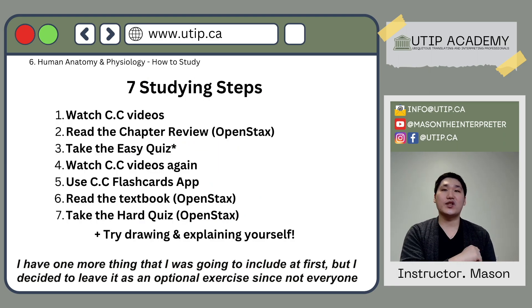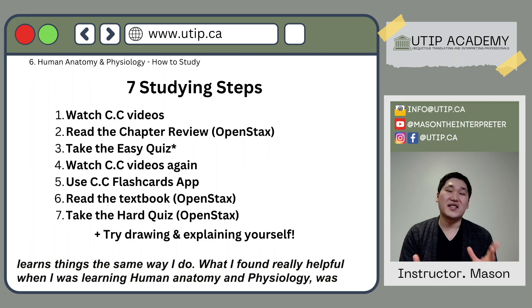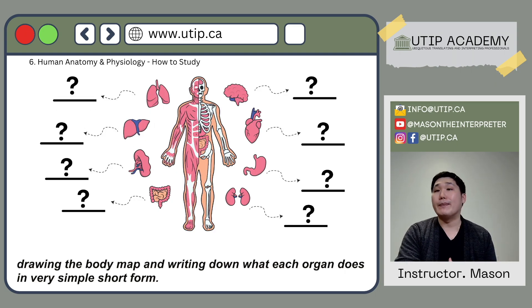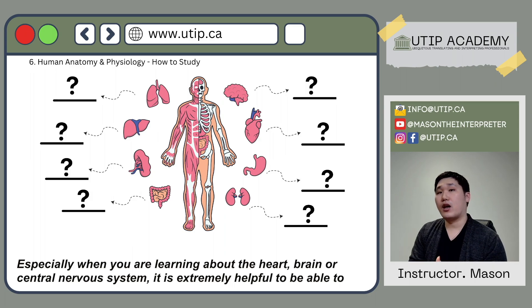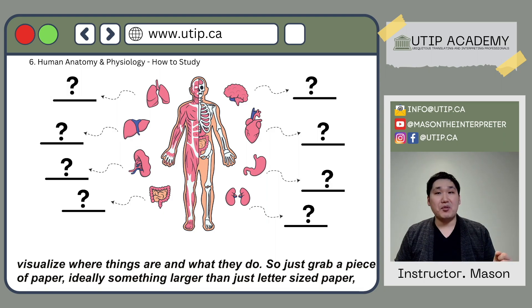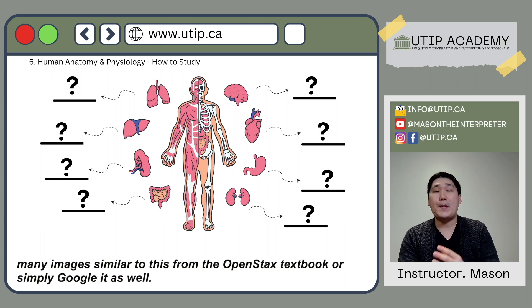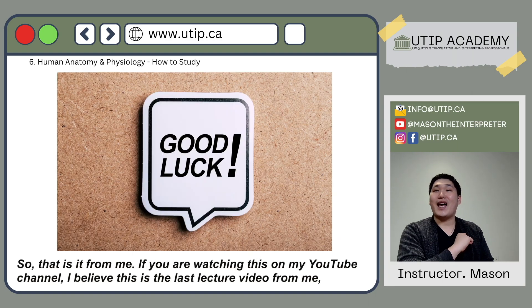I have one more optional exercise that I decided not to require since not everyone learns the same way. What I found really helpful when learning human anatomy and physiology was drawing a body map and writing down what each organ does in simple short form. Especially when learning about the heart, brain, or central nervous system, it is extremely helpful to visualize where things are and what they do. Grab a piece of paper — ideally larger than letter size — and try drawing the body and writing down key functions of each organ. You can also find similar images in the OpenStax textbook or by searching online.